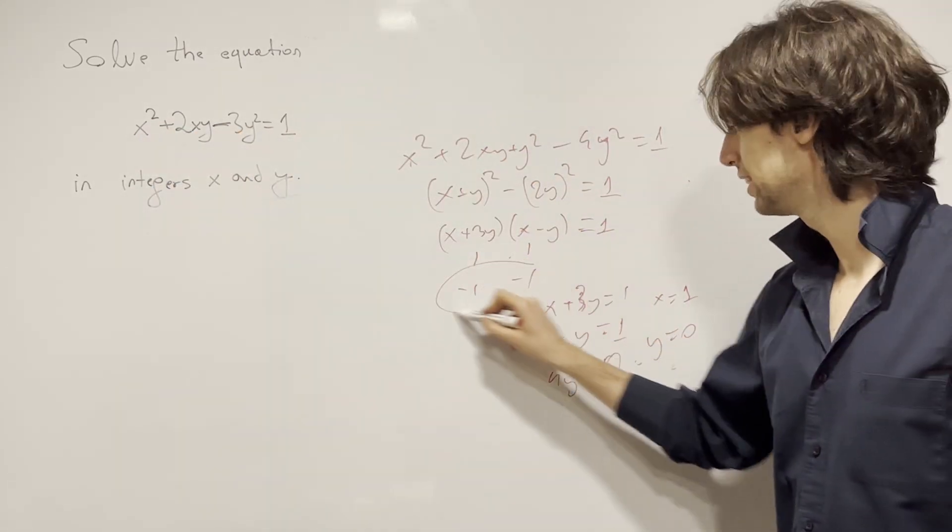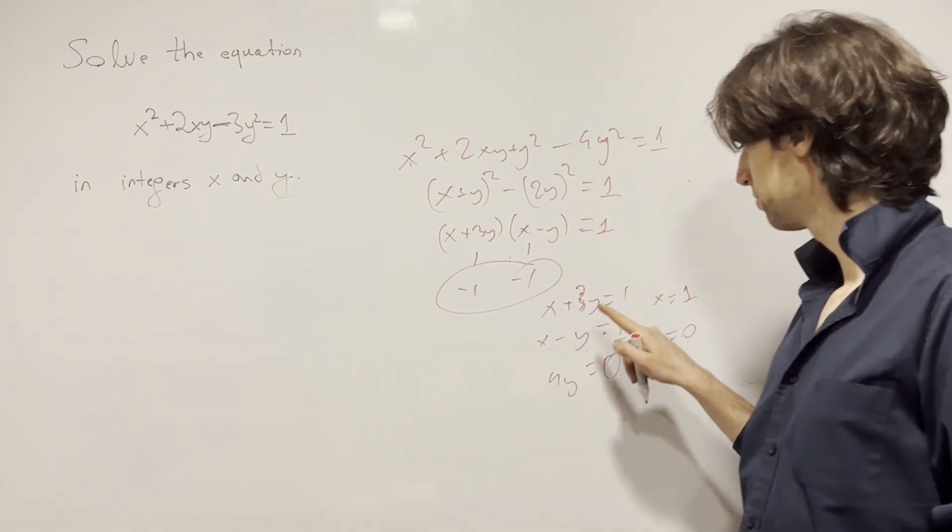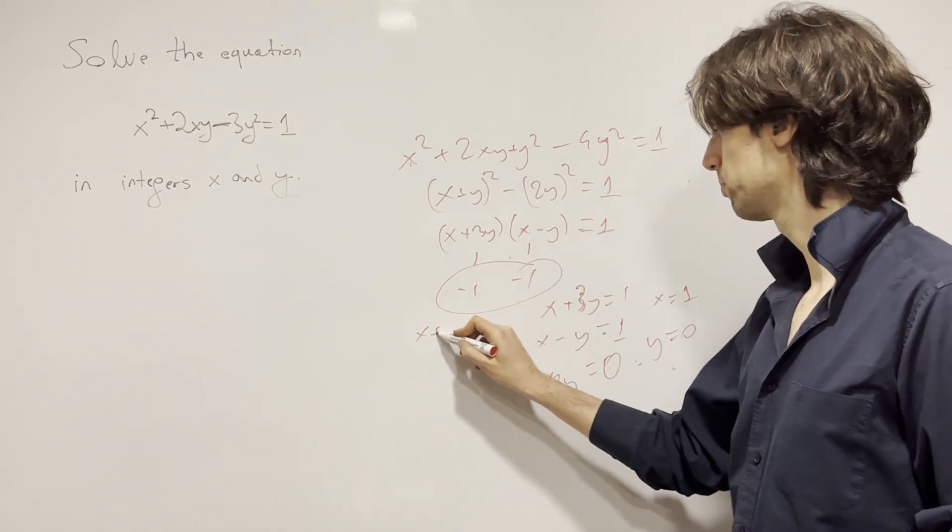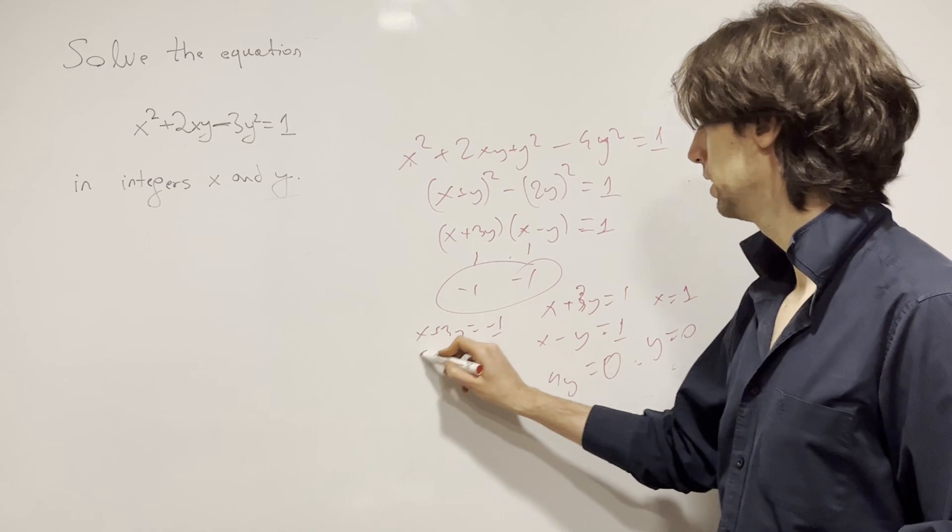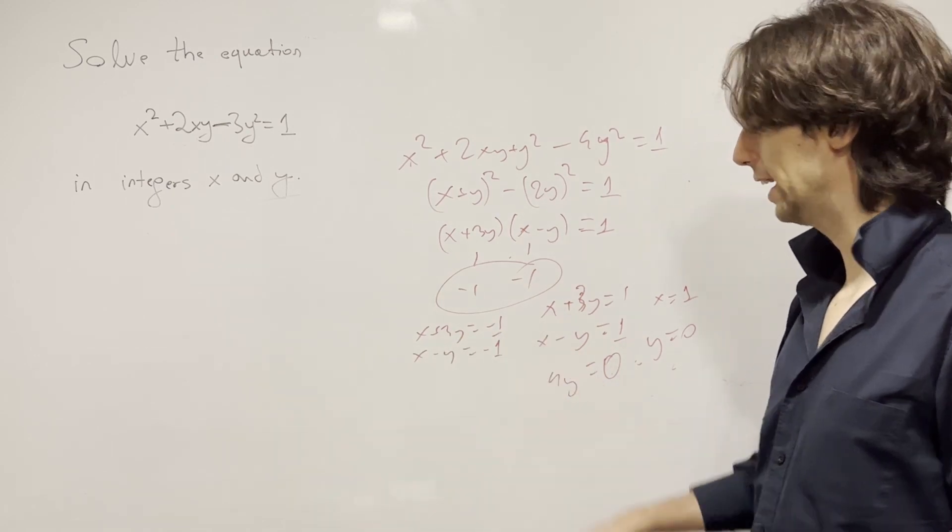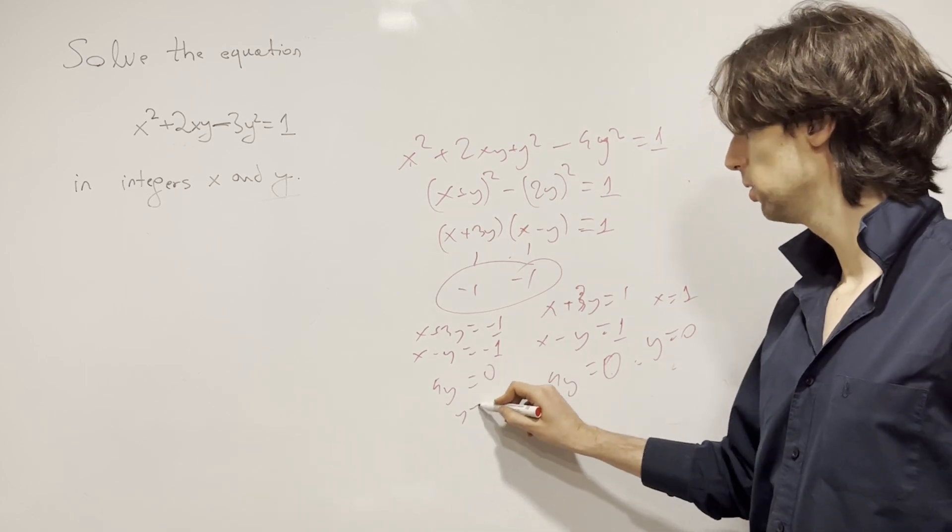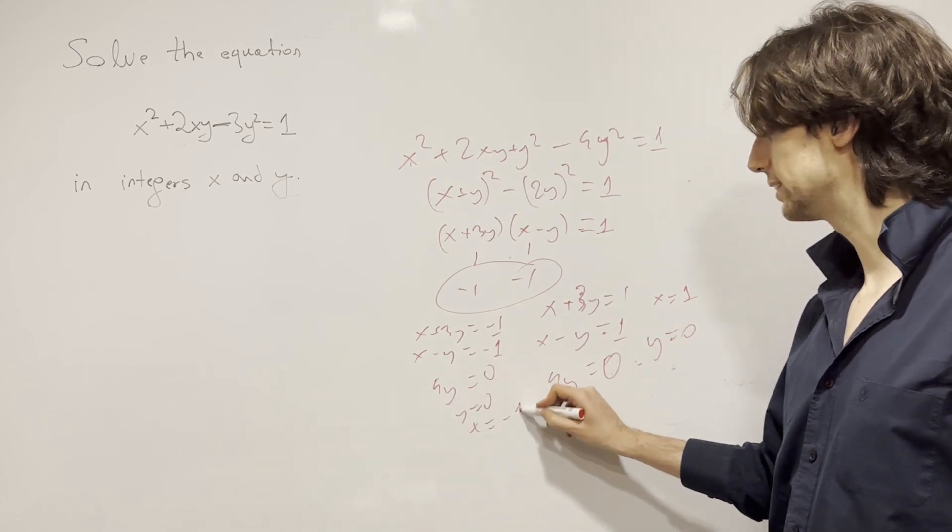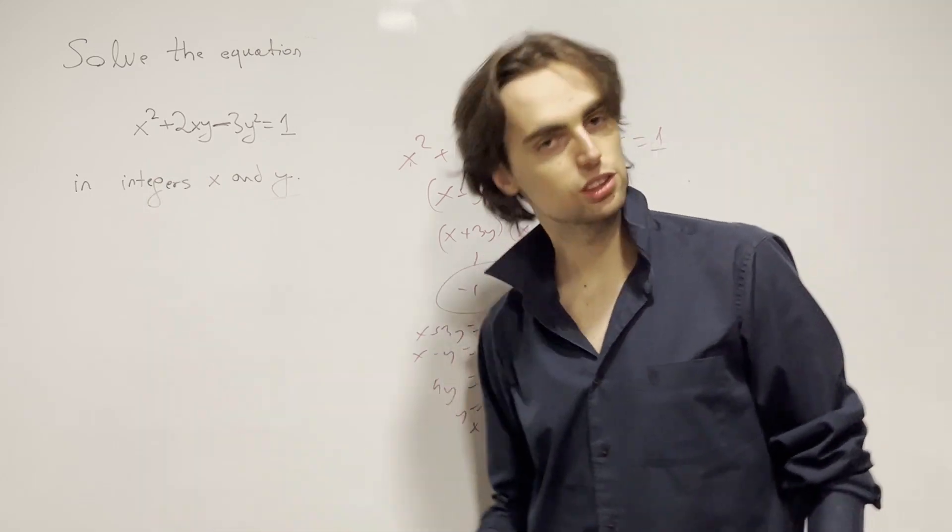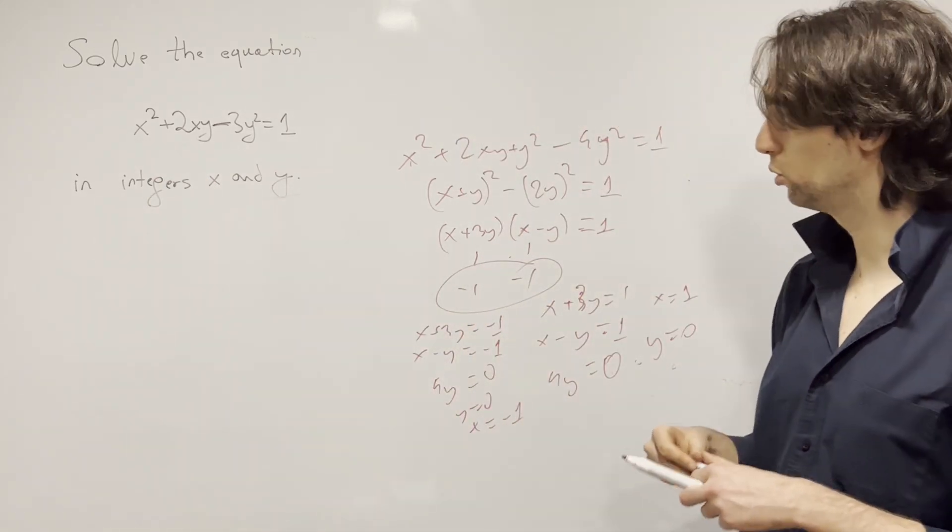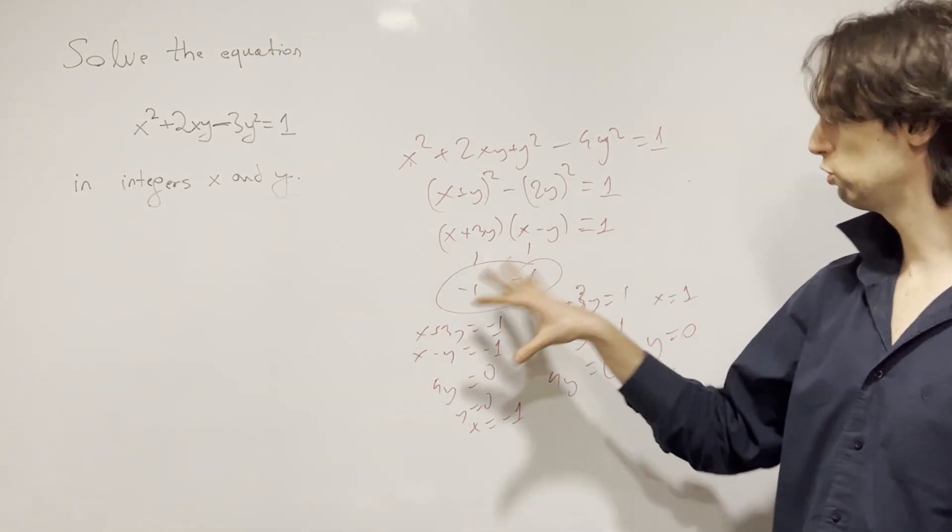And the other one is, in this case, what we'll have is x + 3y is equal to negative 1, and x - y is equal to negative 1. Again, we subtract, get rid of the x, and we get that 4y again is equal to 0, y is 0, which now implies x is minus 1. Minus 1 squared is equal to 1. And this finishes up the problem.